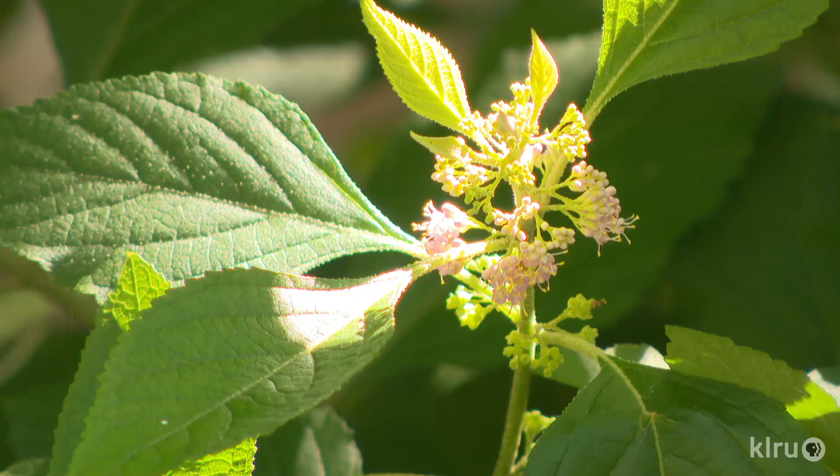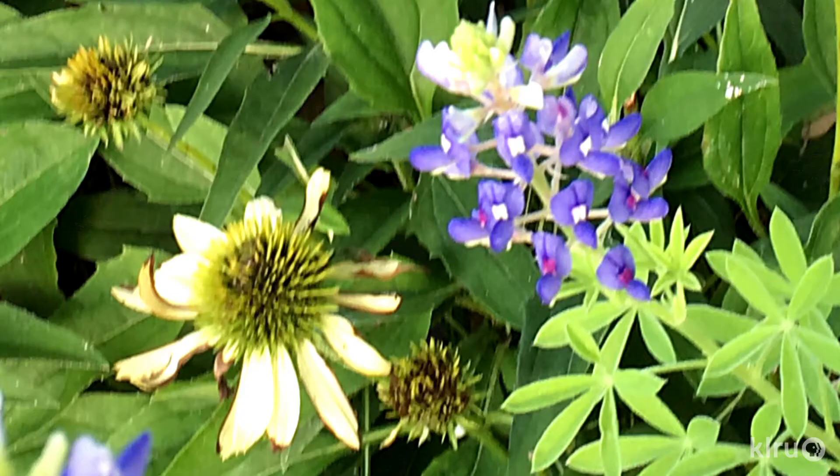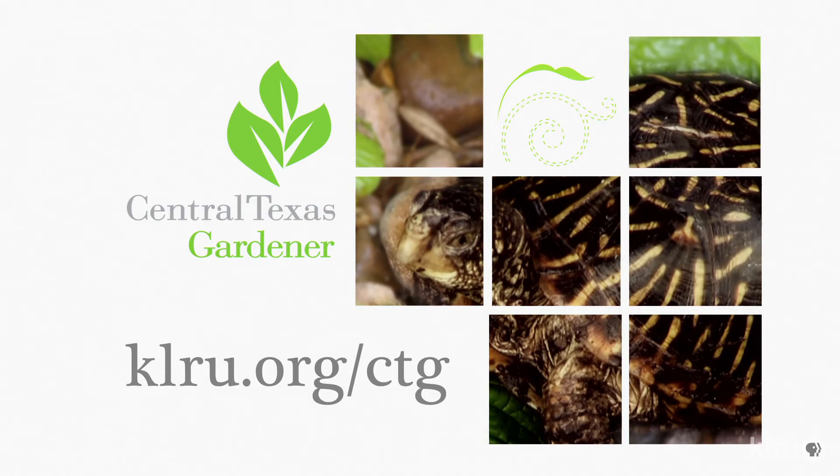As with most shade-loving plants, American Beauty Berry prefers a little extra water, so plant close enough to your home so that you can give it a thorough soaking in times of extreme heat and lack of rainfall. Our viewer picture this week is from Jan Gessler of Bluebonnet and Coneflower blooming together in July. We'd love to hear from you, so please click on klru.org to send us your questions, pictures, and videos.